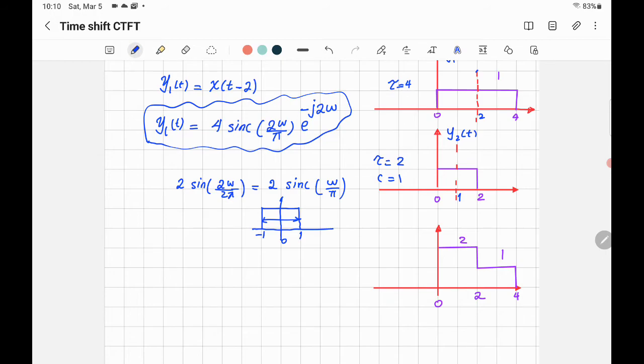So it will be the same thing here: 2 sinc(ω/π) e^(-jω). That would be Y₂(ω).